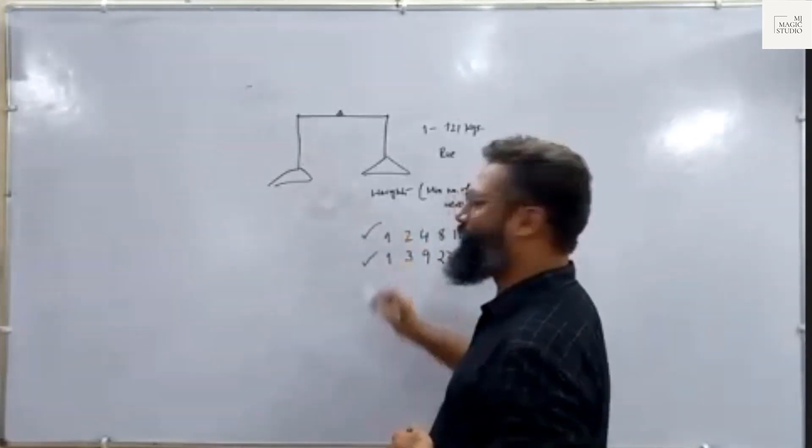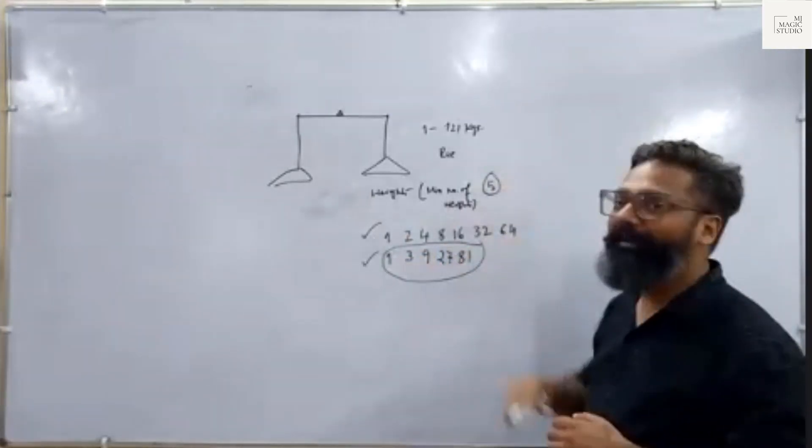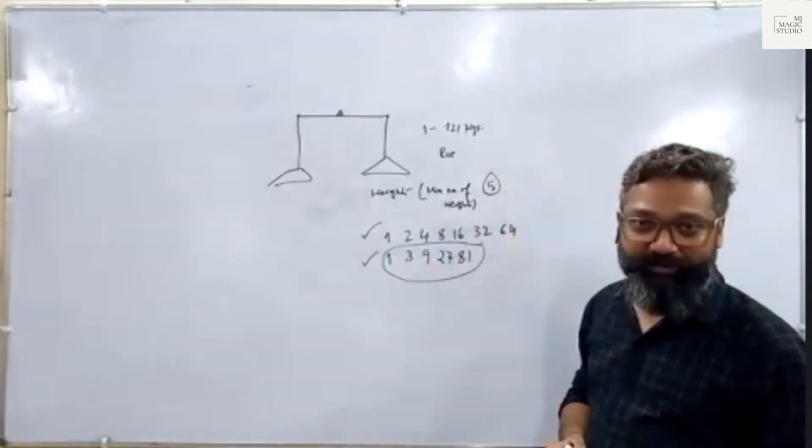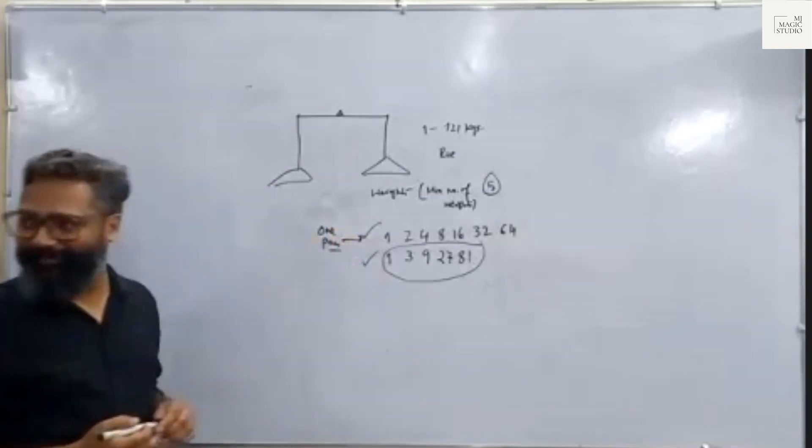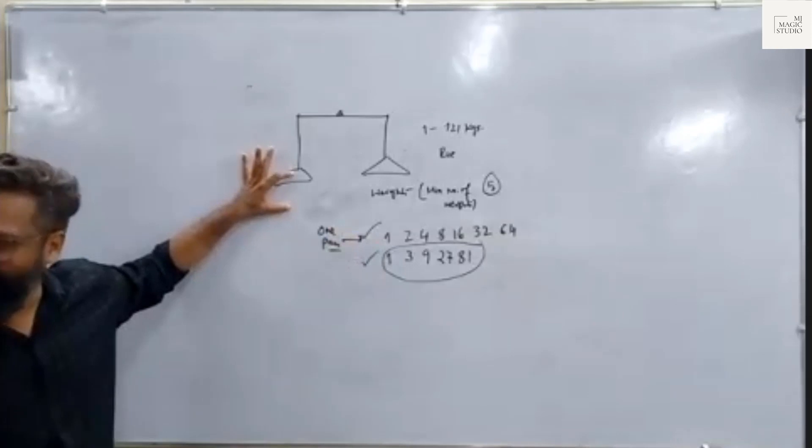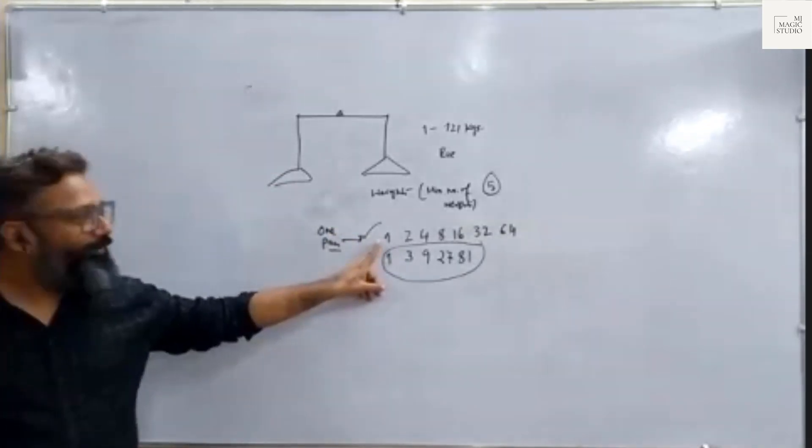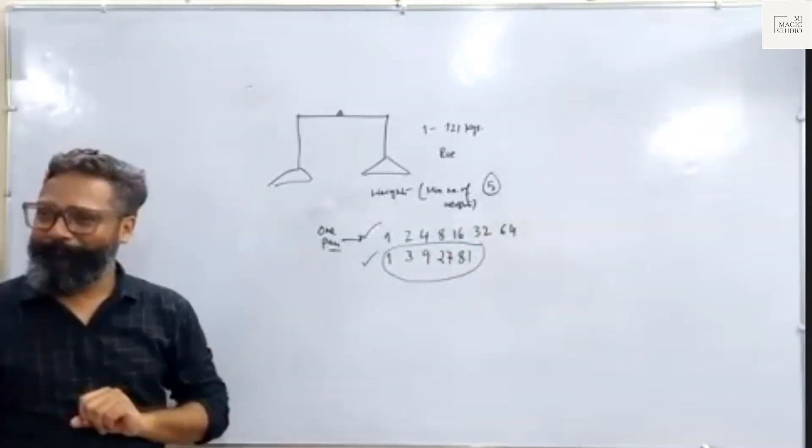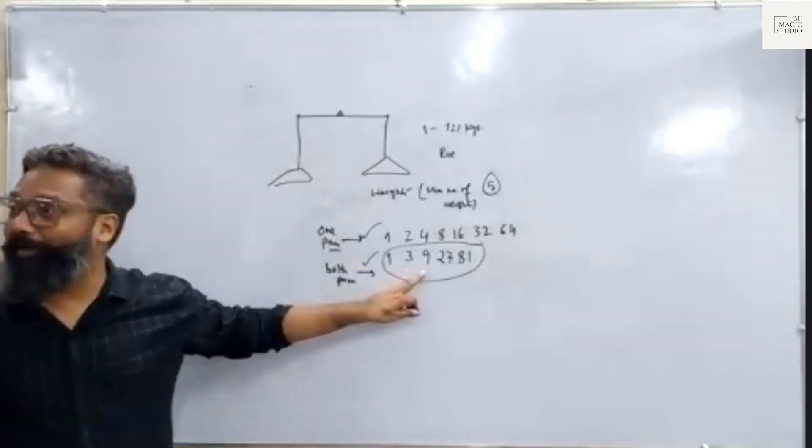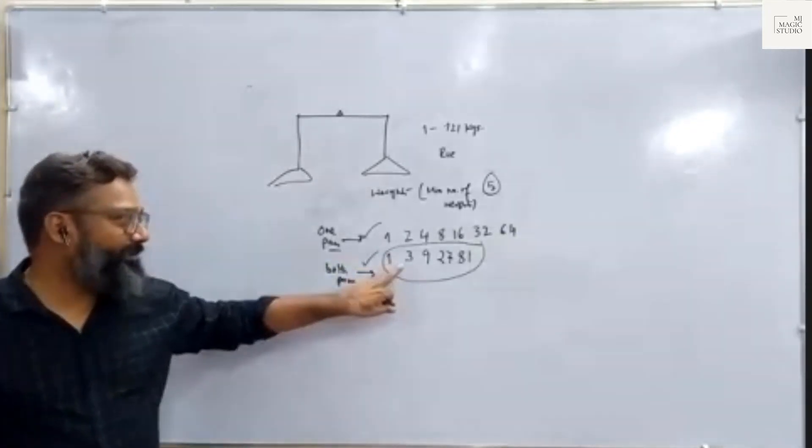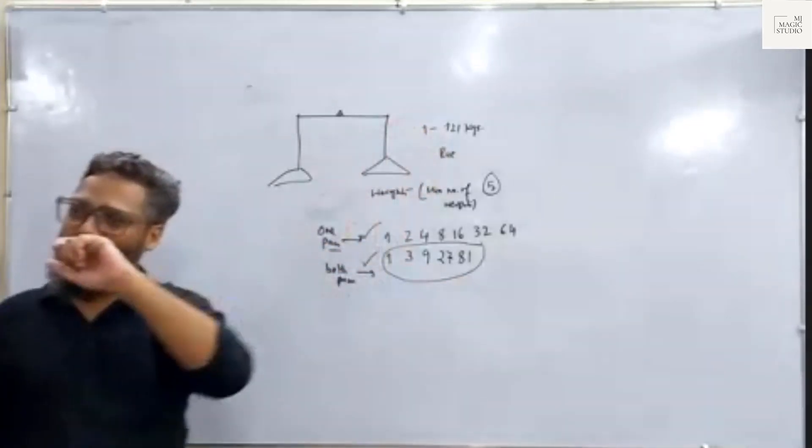But I will tell you both answers are correct under different conditions. If condition is not mentioned, you should answer this - your answer should be 5. If conditions are not mentioned, but if any specific condition is mentioned, what are those conditions? Condition is you can use only one pan for weights, that means you can only keep weights on one pan, then your answer is this. Can you see what is this? This is nothing but powers of two - 1, 2, 4, 8, 16, 32, 64. And if they say that both pans are allowed, then the answer is power of three. Just see: 3 to the power 0, 3 to the power 1, 3 square, 3 cube, 3 to the power 4. And you keep on writing this, keep on adding till you get this last point or you cross the last one.